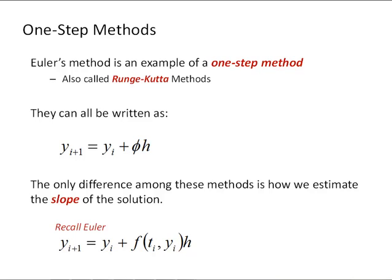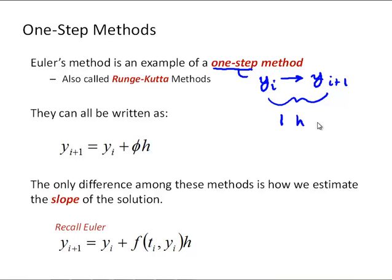Before we talk about the midpoint method, I want to talk a little bit about the general idea of one-step methods. Euler's method is an example of a one-step method. It's called a one-step method because we're stepping from some yi to yi plus one, going across one h, or one time step. These methods are also called Runge-Kutta methods, which describes a generalized approach to developing one-step methods.